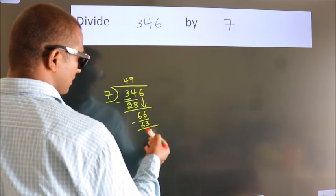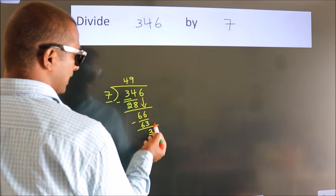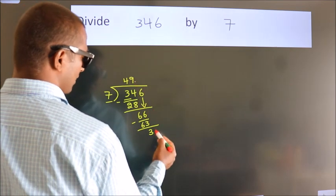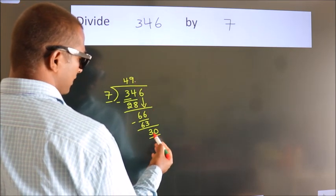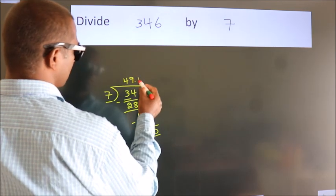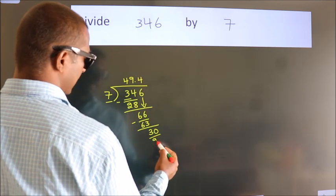After this, no more numbers to bring down. So, what we do is, we put dot and take 0. So, 30. A number close to 30 in 7 table is 7 fours, 28.